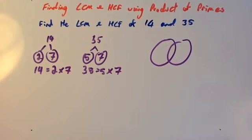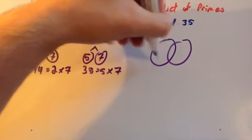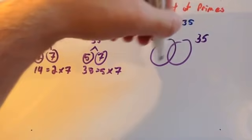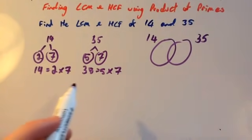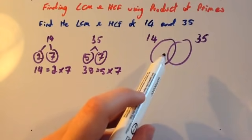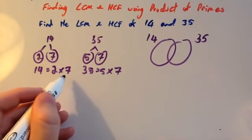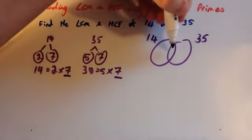A Venn diagram will look something like this. One circle represents 14 and the other circle represents 35. What we're going to do is put these prime numbers into the circles. In the middle are prime numbers that are in both of these. Here you can see this one's got a 7 and this one's got a 7, so we're going to put one 7 in the middle.